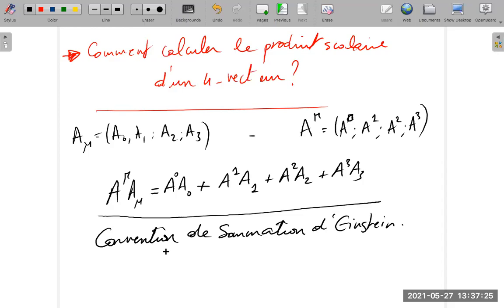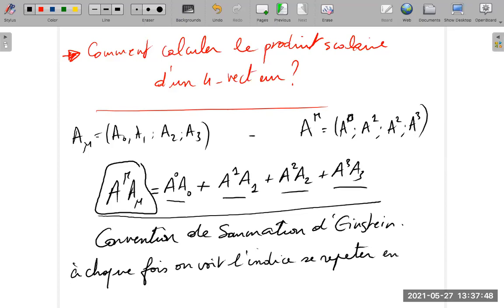So it's Einstein who established this rule. Instead of writing the summation sign each time, every time we see the index repeated above and below, it has this meaning. This is Einstein's summation convention.